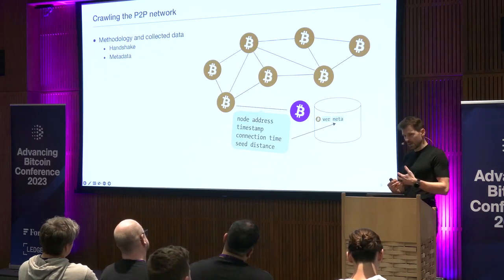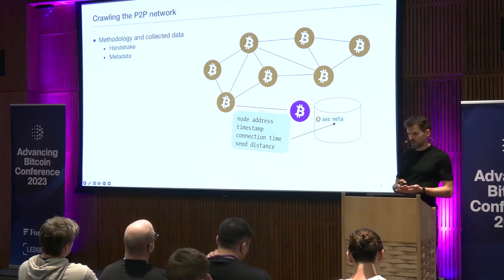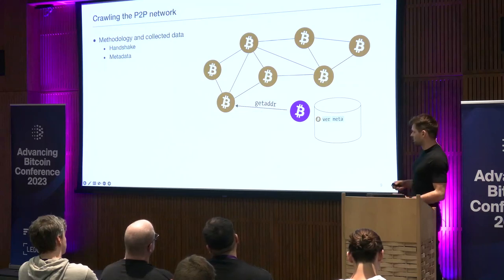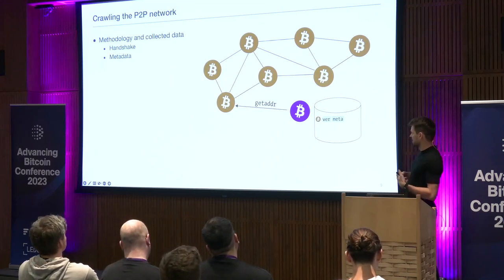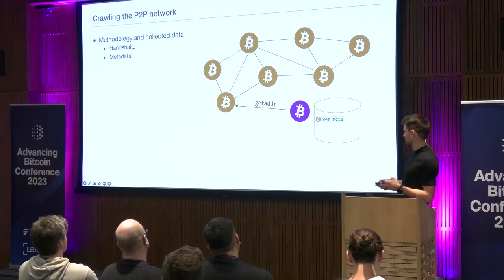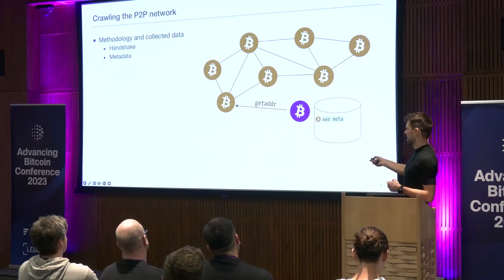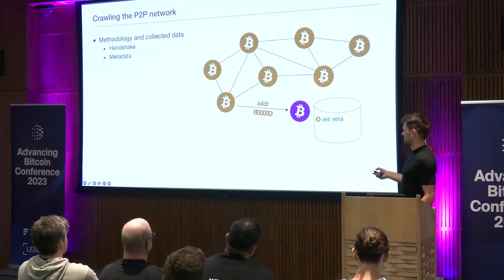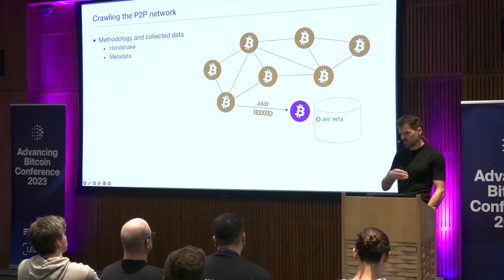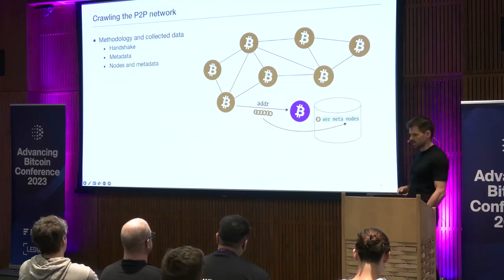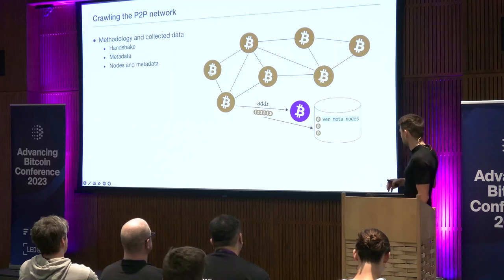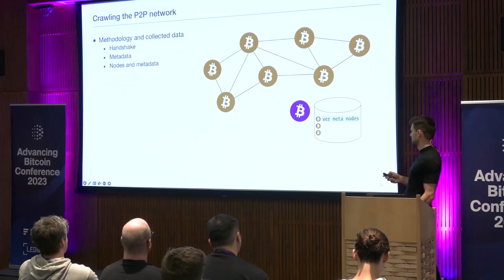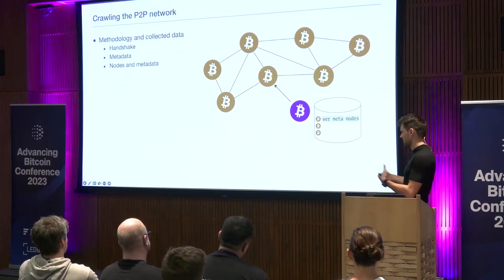Beyond explicitly exchanged data, we also store metadata like when we connected to the node and how long it took. Then we inquire about peers known by that node — we request what other Bitcoin nodes it knows, receive a reply, and that's how we learn about more nodes beyond those provided by the DNS seeds. We store these as well, allocate new rows in our database for all received nodes, and continue with the same crawling process for each of them.